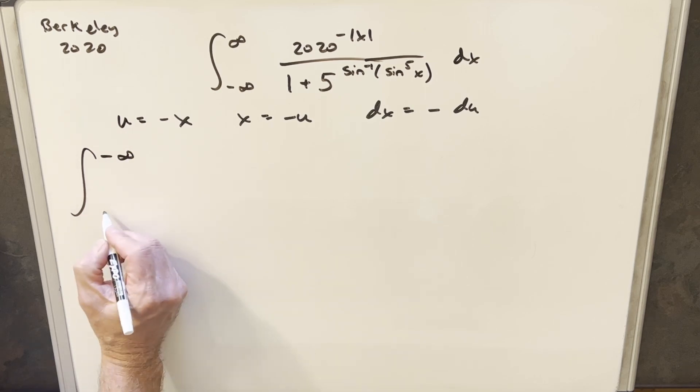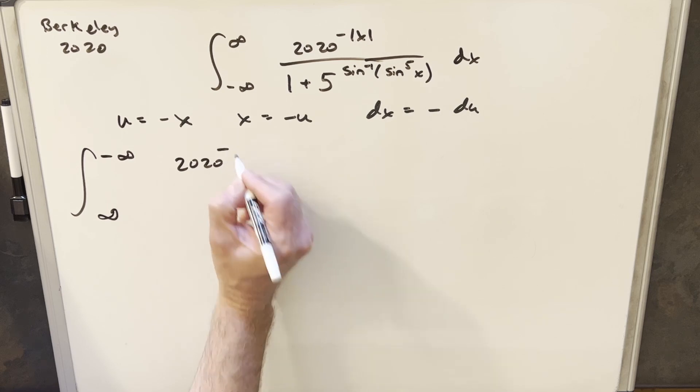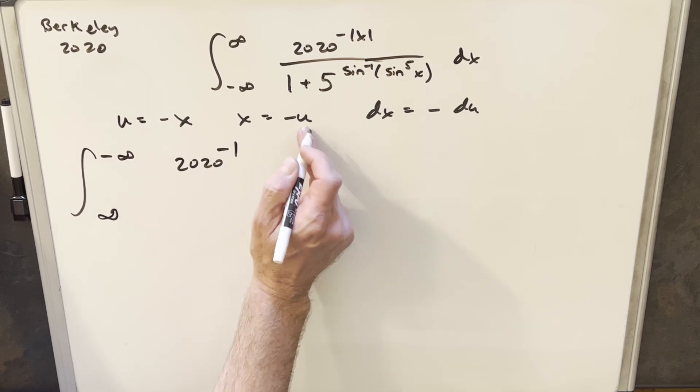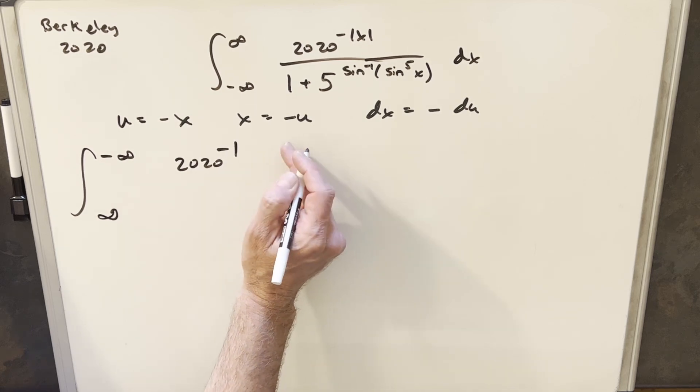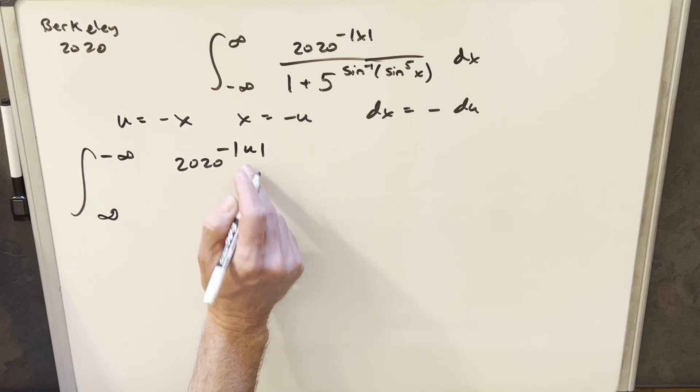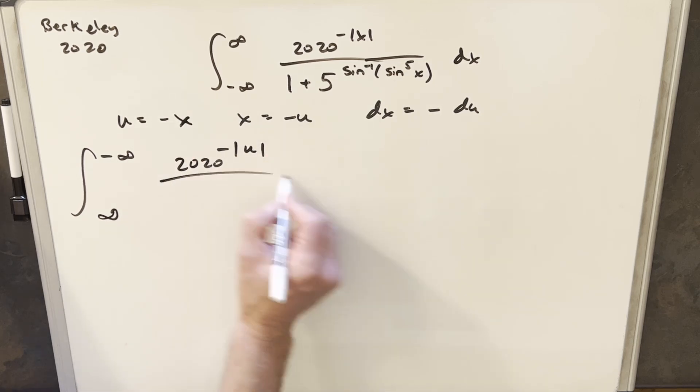And then when we make this substitution, we're going to be reversing the sign on the bounds. So now we're going from infinity to minus infinity. We'll have 2020 minus absolute value of minus u. But because we're in the absolute value, I'm just going to write that as u because the minus sign in front is not going to matter on absolute value.